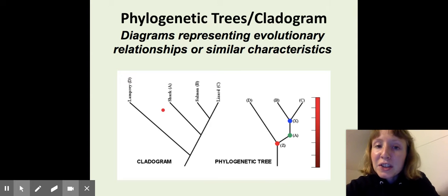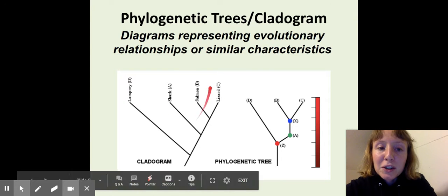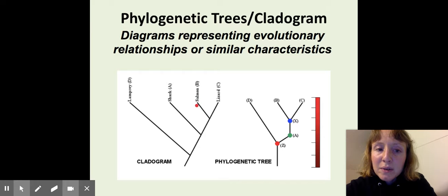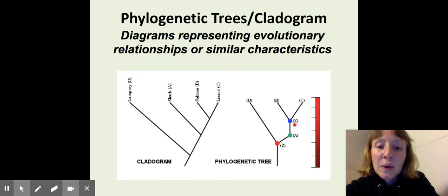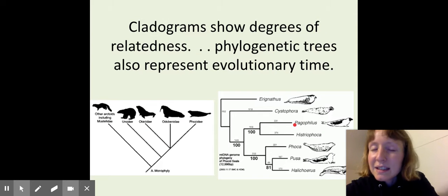Phylogenetic trees or cladograms are diagrams scientists use to represent degrees of relatedness between species. For example, this diagram here shows that salmon are actually more closely related to shark than they are lamprey. Let's look at some of these diagrams.